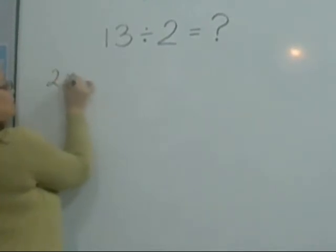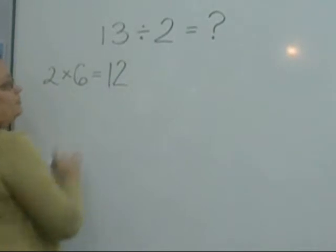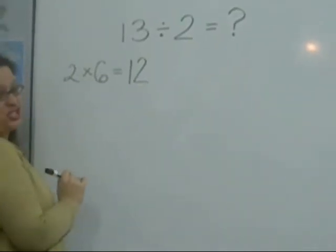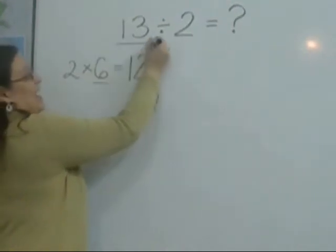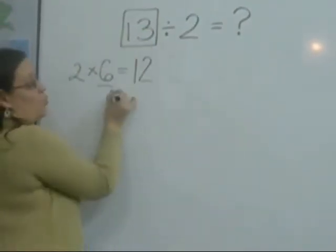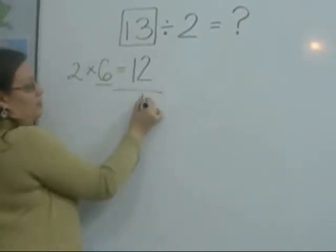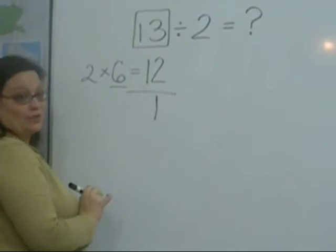2 times 6 equals 12. I can give each of my friends 6 cookies, but I have 13. So I will have 1 cookie left over. 13 minus 12 equals 1.